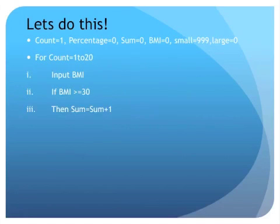So we're going to add up all the BMIs that are 30 or above in sum and save them in that variable. Then we end if.